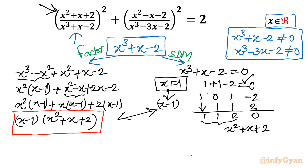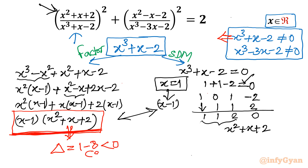For the factor x² + x + 2, the discriminant is b² - 4ac = 1 - 8 = -7, which is negative, giving only complex solutions. So for the first denominator, the only real exemption is x ≠ 1.